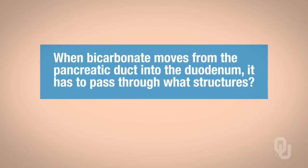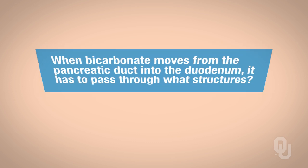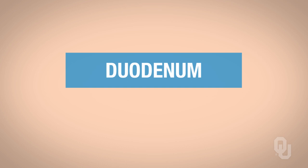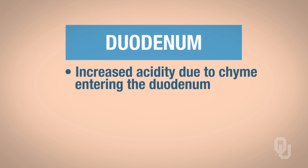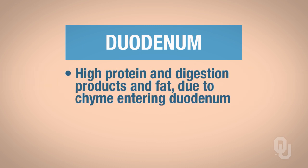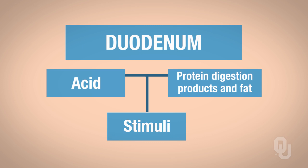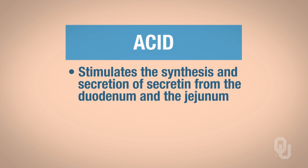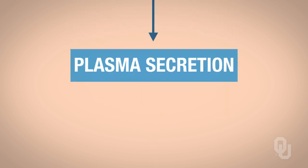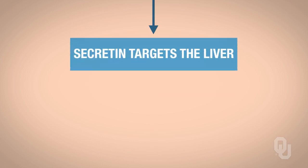When bicarbonate moves from the pancreatic duct into the duodenum, what structures does it have to pass through? Go back and look that up in your notes. So again, we start up here in the duodenum. We know why there's increased acidity because the chyme just moved from the stomach. We also know why there's high protein digestion products and fat—again because the chyme moved from the stomach to the duodenum. These are your stimuli. The high acidity content is going to stimulate synthesis and secretion of secretin from the duodenum and jejunum, which travels out into the blood and is also going to target the liver. When secretin targets the liver, that's going to increase bile secretion.